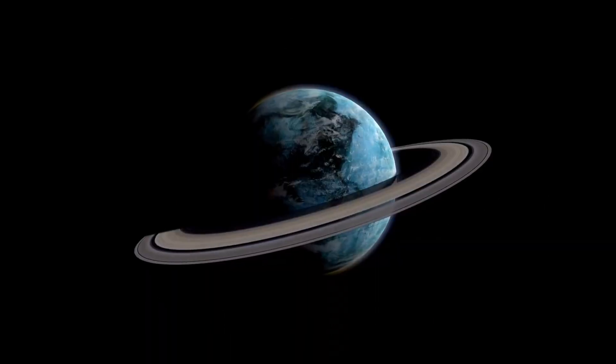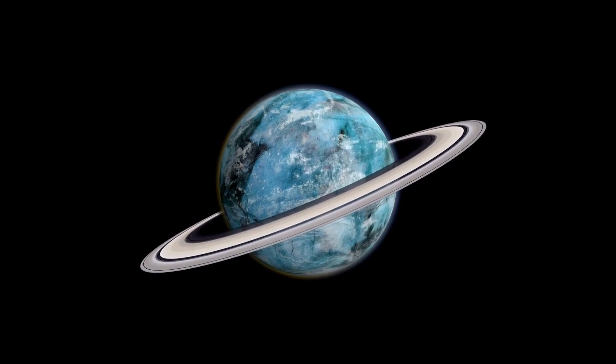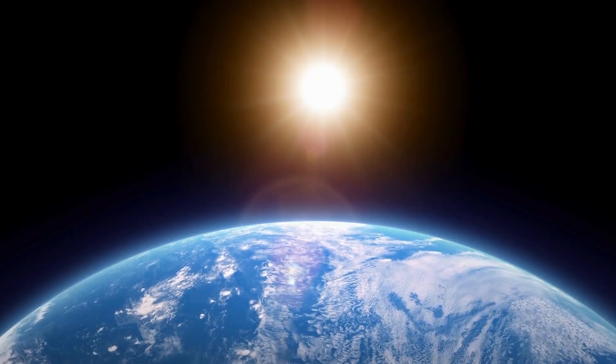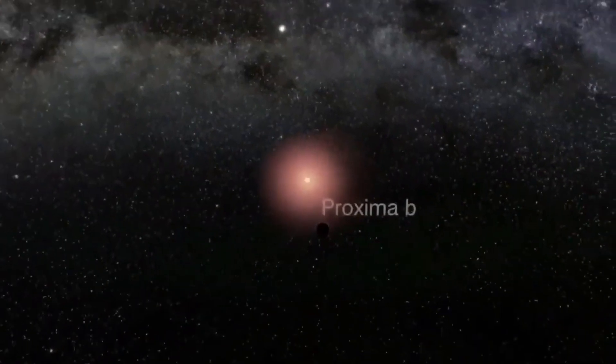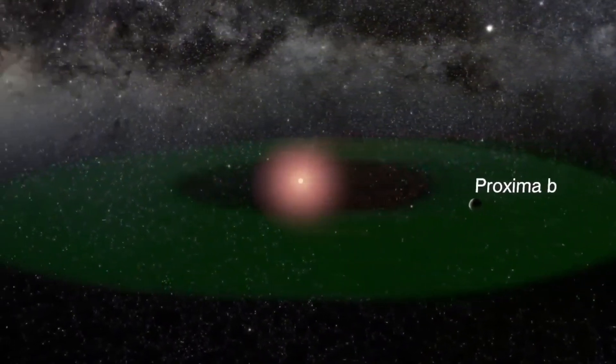The two stars, Rigel Kentaurus and Alpha Centauri b, form a binary system known as Alpha Centauri a and b. These G and K type stars appear as one star in the constellation Centaurus and are the third brightest stars in our night sky, with a peak brightness of under 2.7.